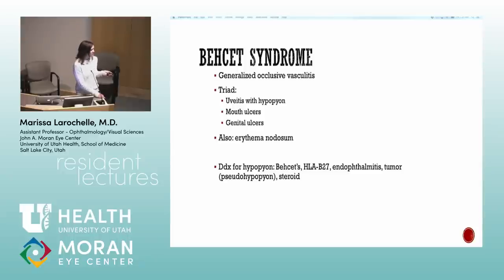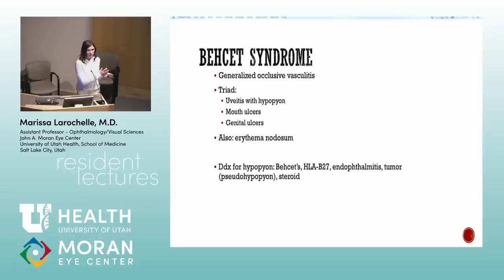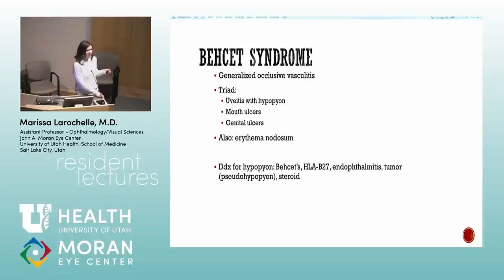Endophthalmitis should be considered if there is no recent surgery in a patient with systemic illness. Tumor can cause pseudo-hypopyon — retinoblastoma, lymphoma, leukemia layering out and mimicking hypopyon. Another pseudo-hypopyon is lens-induced uveitis. Steroid injection landing in the wrong part of the eye — such as intravitreal triamcinolone — can also look like hypopyon.